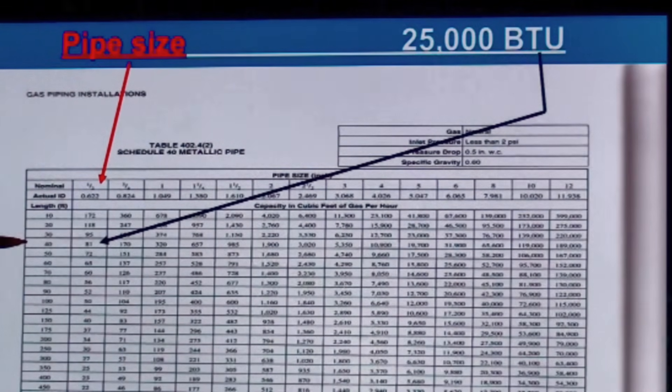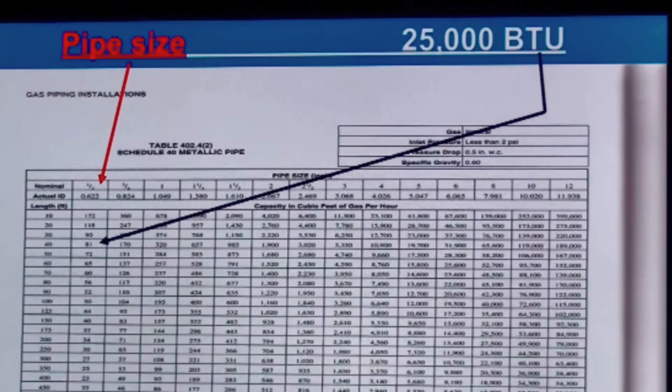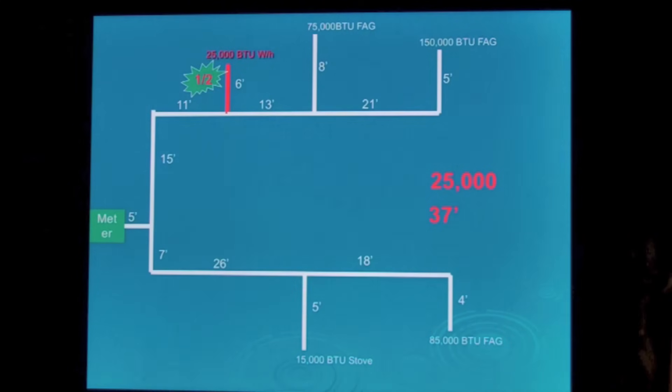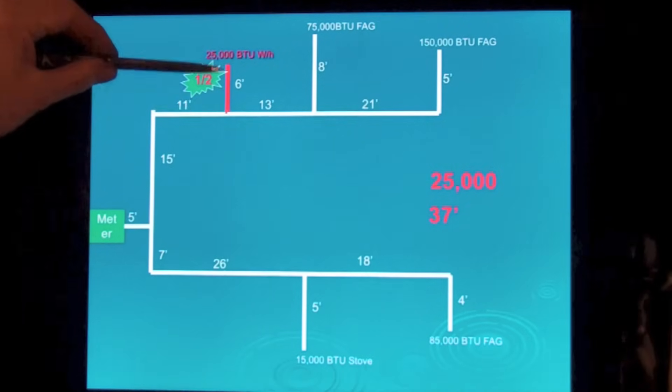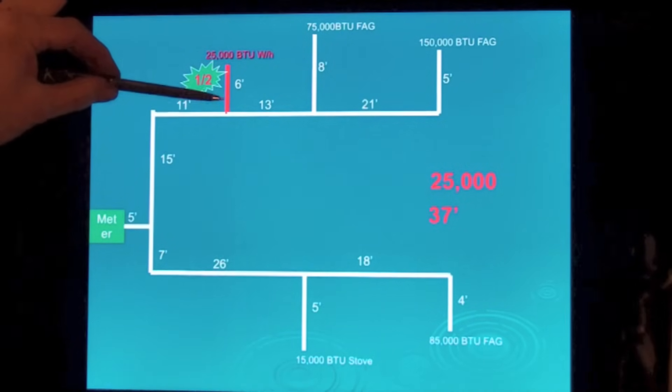There is no thirty-seven, so we go up to the next highest one, which is forty. Half-inch will do eighty-one thousand BTUs. So I can use half-inch pipe. This section, this drop right here, is half-inch pipe.